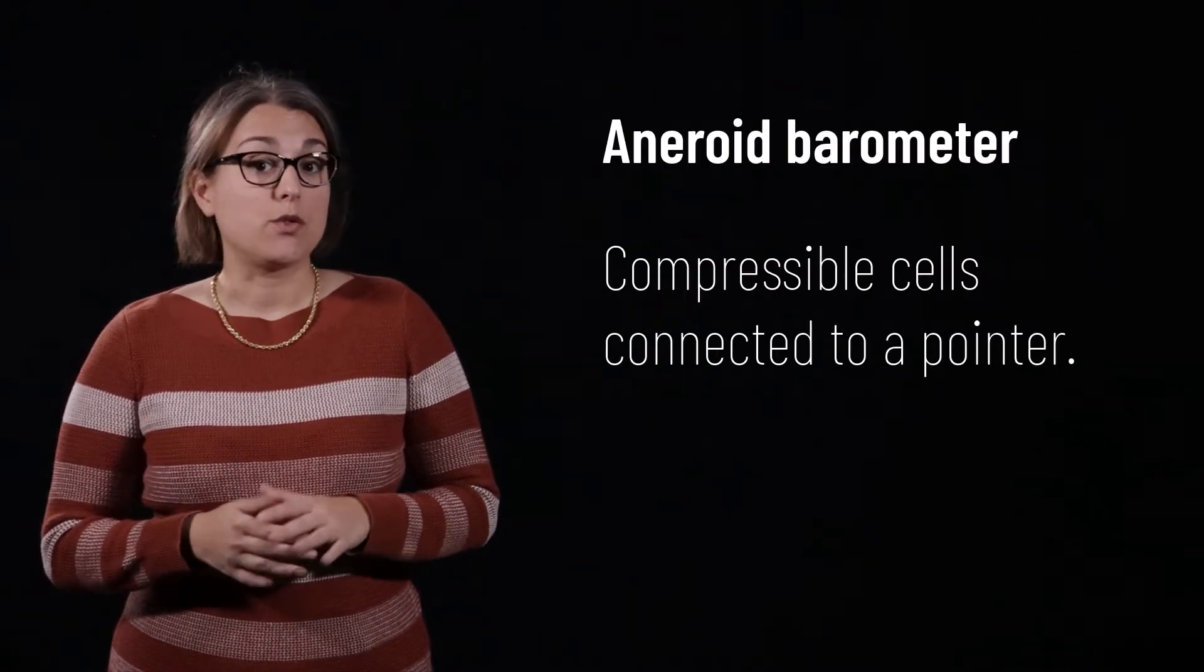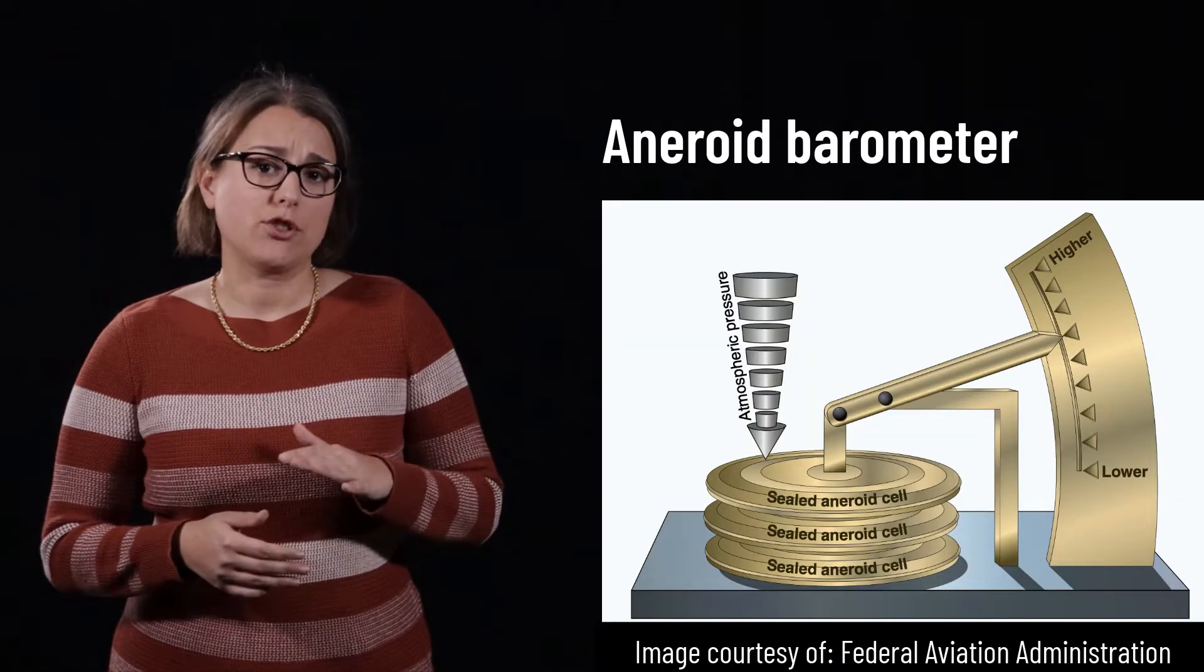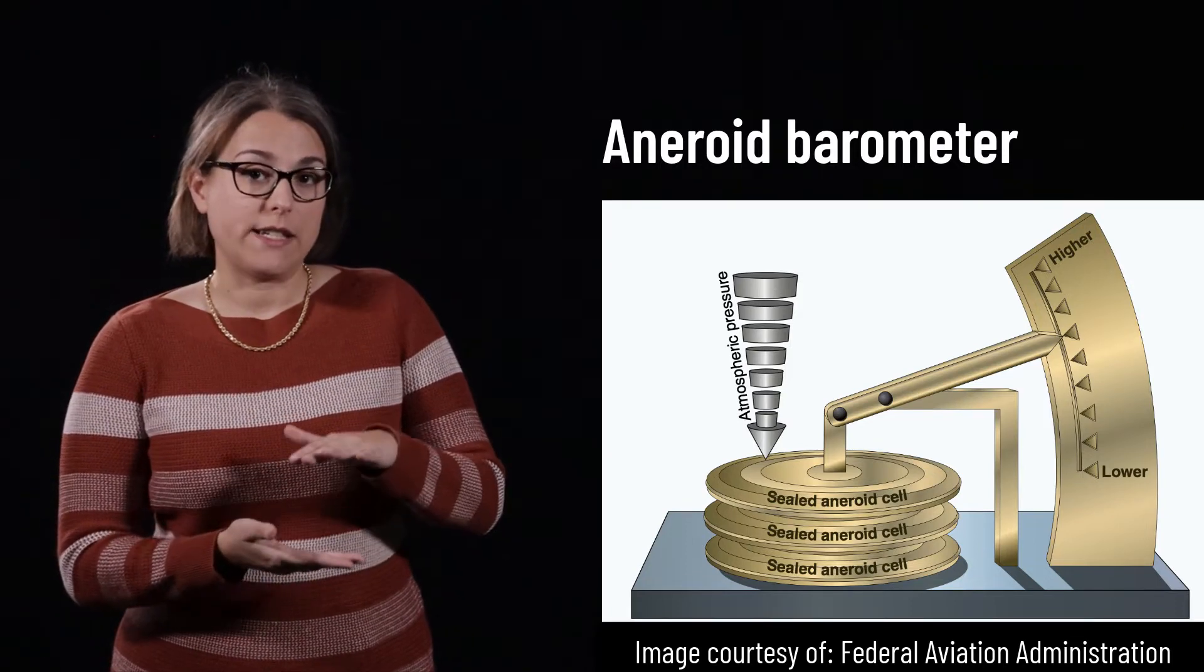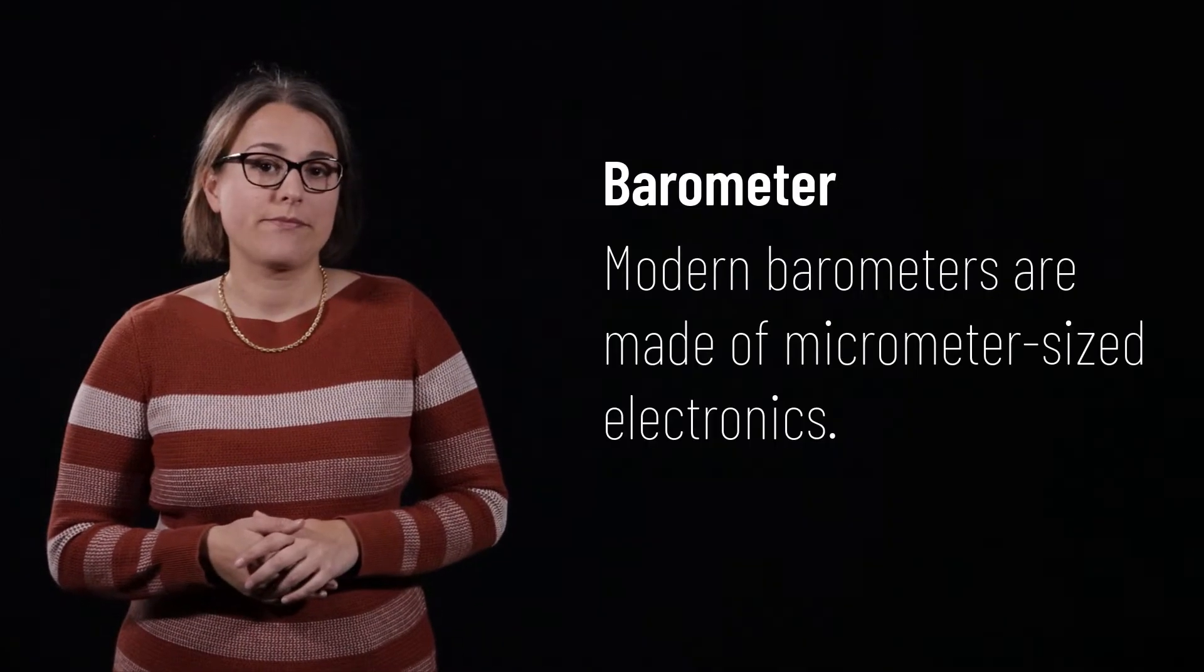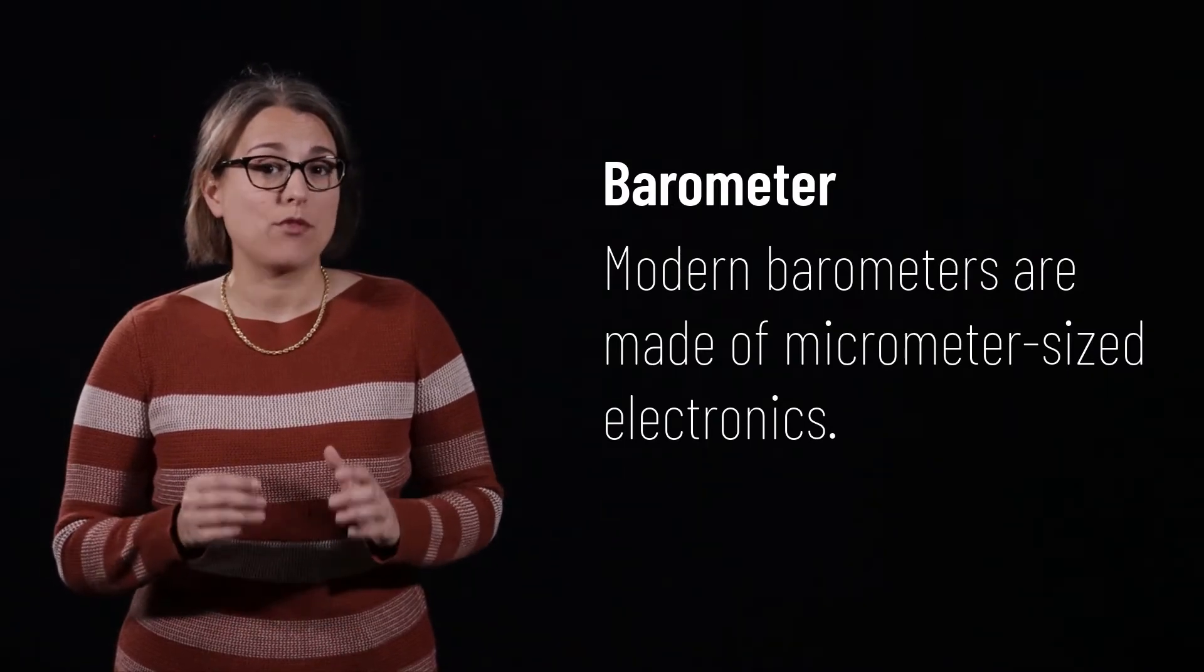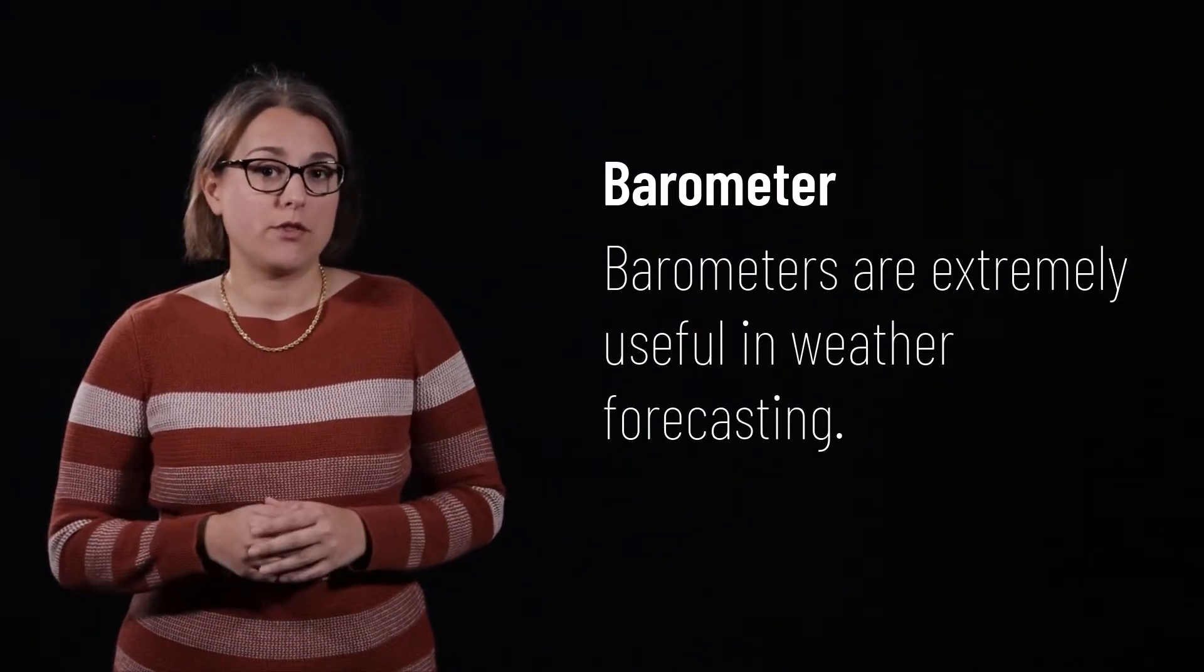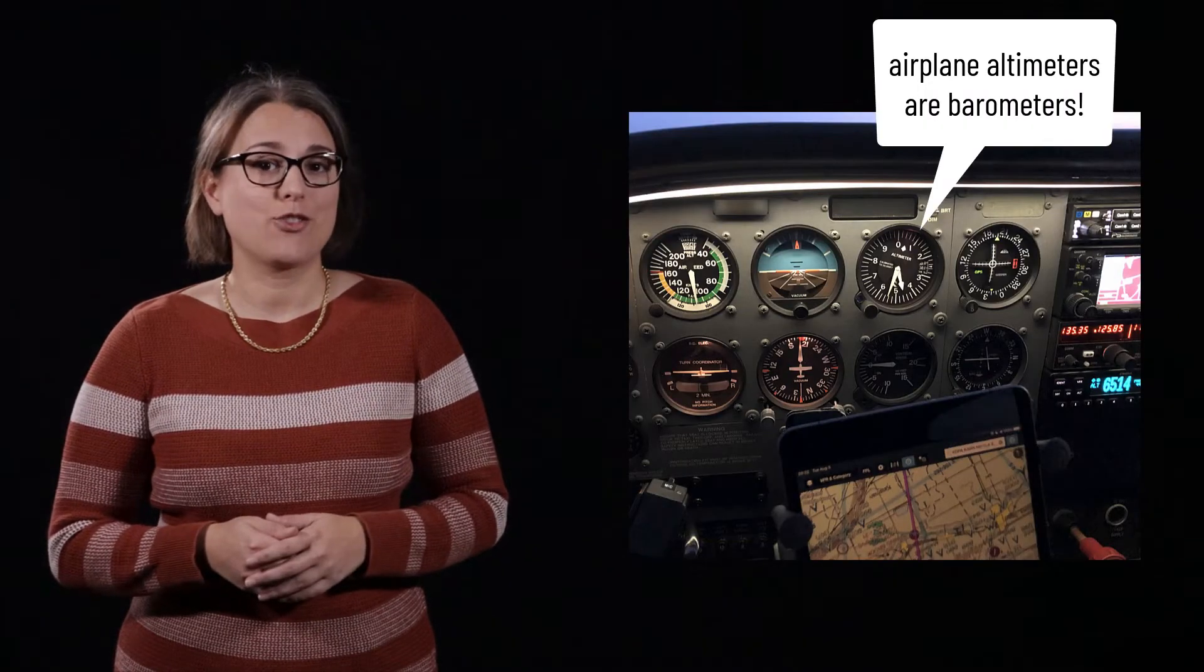Aneroid barometers use compressible cells connected to a pointer to indicate pressure. As pressure increases, the cells are squished and the needle moves to higher values. As air pressure decreases, the cells expand and the needle indicates lower pressure values. Today, many devices such as smartphones and watches use tiny barometers made out of micrometer-sized electronics. Barometers are extremely useful devices in forecasting weather and are an essential instrument in airplane control panels.